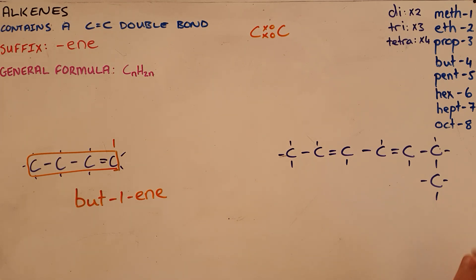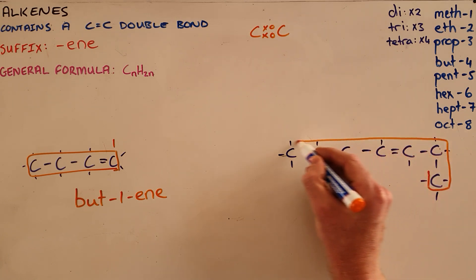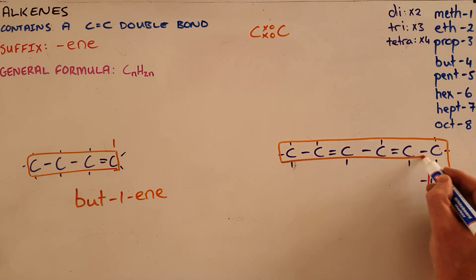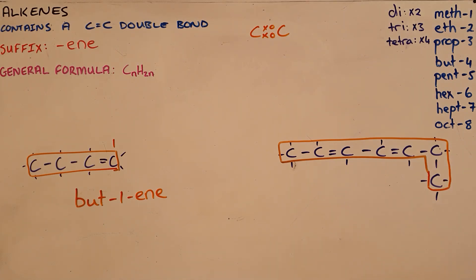For a more complicated molecule, we follow a similar pattern where we first identify the longest carbon chain, keeping in mind that bends in the chain do not affect chain length. The longest chain here is one, two, three, four, five, six, seven carbons long, which gives us the prefix HEPT.